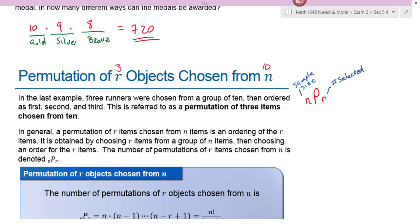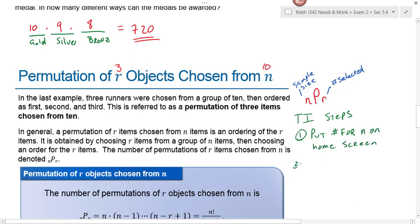The steps for doing this on your calculator, very similar to the factorial. You're first going to put a number for n on your home screen. Then you're going to hit math, scroll over to probabilities, and then down to, I think it's number two, and then you're going to hit enter, and then you're going to put in a number for r, and then you hit enter, and it gives you your answer.